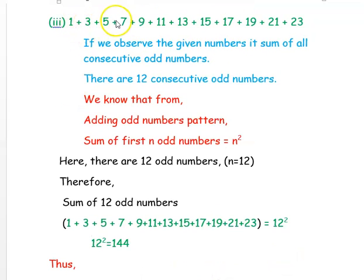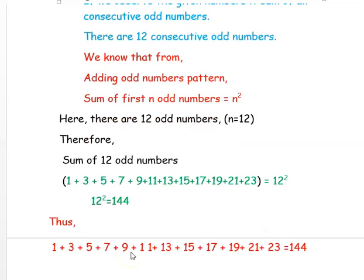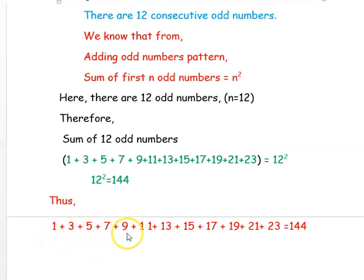The next question is 1 + 3 + 5 + 7 + 9 + 11 + 13 + 15 + 17 + 19 + 21 + 23. These are all consecutive odd natural numbers and, counting them, we have 12 consecutive odd natural numbers, so n = 12. The sum of first n odd natural numbers equals n², so the sum equals 12² = 144. Thus, without adding all these numbers, we have found the sum. Hope you have understood all the examples well. Thank you for watching.